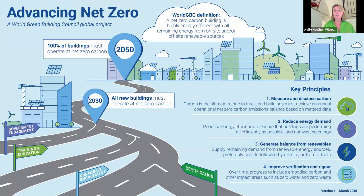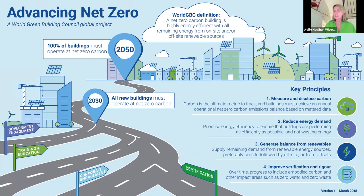The World Green Building Council has produced clear infographics with a key message: by 2030, all new buildings must operate at net zero carbon, and by 2050, 100% of all buildings must operate at net zero carbon. The key principles are measuring and disclosing carbon — both operational emissions and embodied emissions from materials — reducing energy demand, generating a balance where energy used in the building is sourced from renewables, and making verification more rigorous.